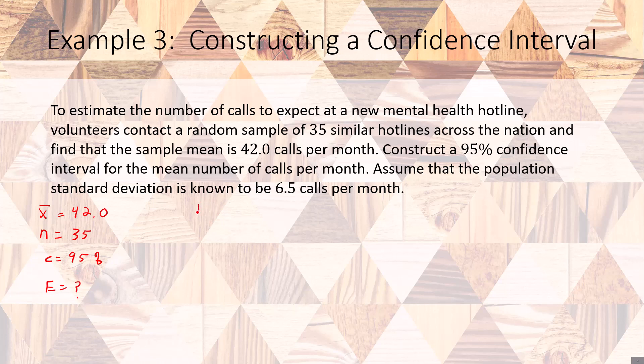From our previous slide we know that our margin of error E is going to equal our critical value, which we call Z alpha over 2, times our population standard deviation divided by the square root of the number of samples. So the only thing we need to do is figure out what our critical value is.